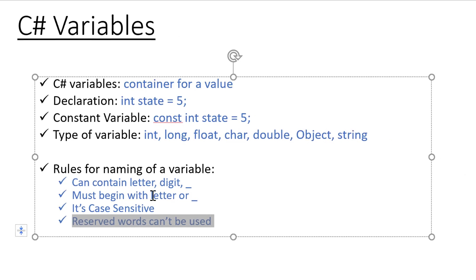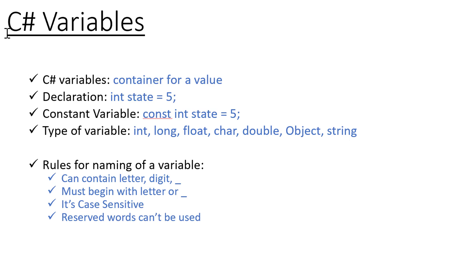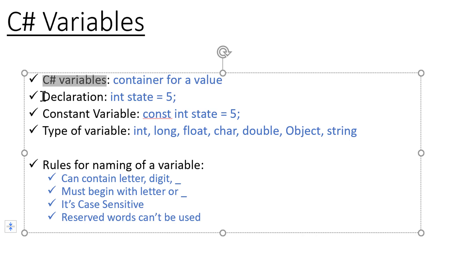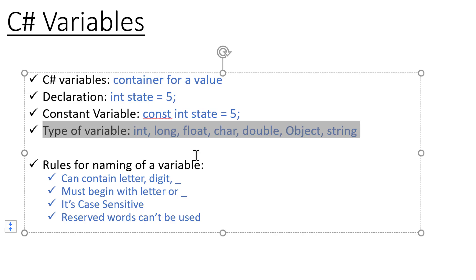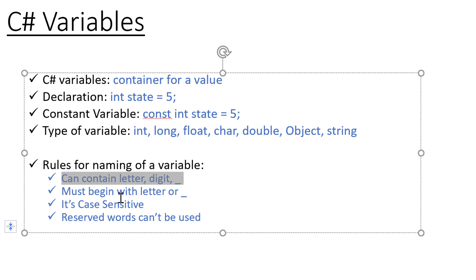So those were the rules for creating variables in C#: what variables are, how to declare them, what constant variables are, what types of variables exist, and naming rules — letters/digits/underscore, must begin with a letter or underscore, case sensitive, and reserved words can't be used. If you have any doubts, please write in the comment section. If you liked the video, please like it and subscribe for more such videos. Thank you!